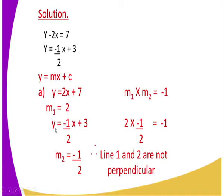And the second line, y equals negative one-half x plus 3, so gradient 2 is negative one-half. Therefore, if we apply the product rule, m1 times m2 — representing the gradient of line one and line two respectively — should give negative one. And indeed, 2 times negative one-half equals negative one. Therefore, we can say line one and line two are perpendicular.